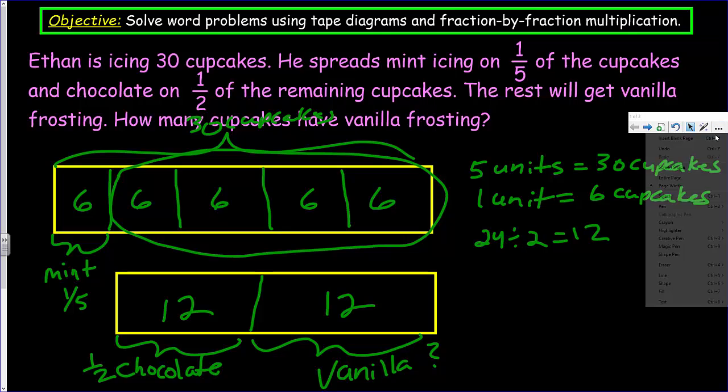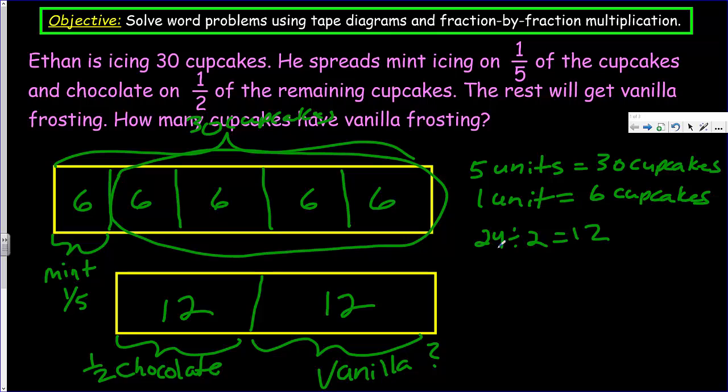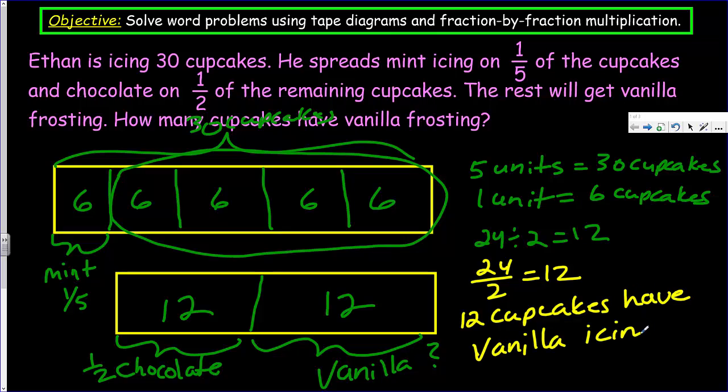Let's come down. So 24, we can also write it this way, 24 divided by two, is equal to 12. Another way to show that. Well, then that would mean that 12 then, 12 of the cupcakes, have vanilla icing, based on that number. So 12 cupcakes have vanilla. So there you go. You have 12 cupcakes have vanilla icing. And that works out.